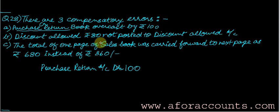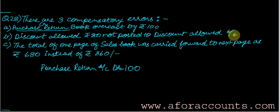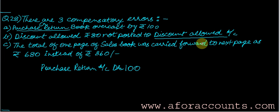Now the second point: discount allowed ₹80 not posted in the discount allowed account. Discount allowed is an indirect expense; expenses are always debited. Since it has not been done, we need to do it now. So: discount allowed account debit by ₹80.